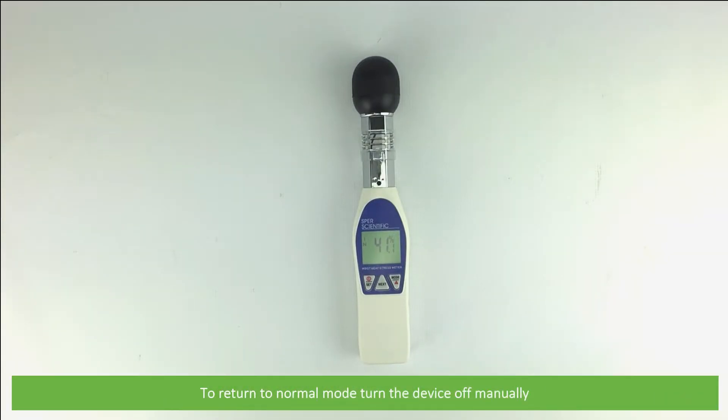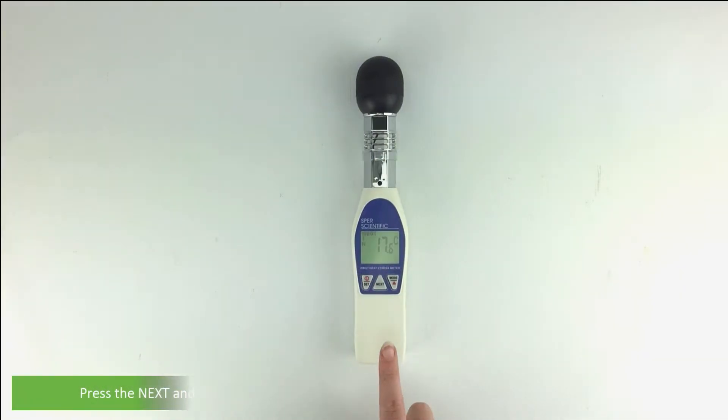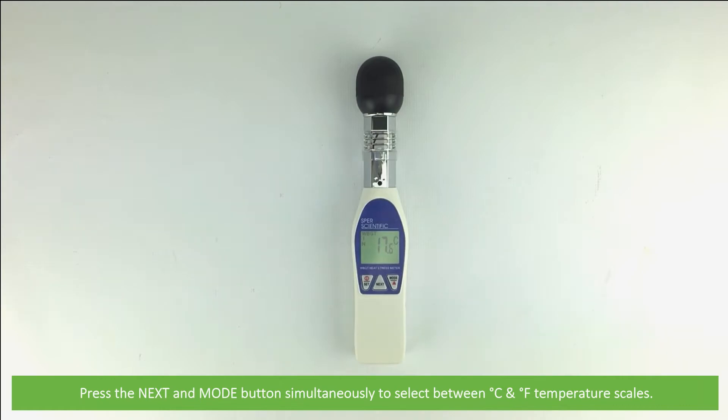To return to normal mode, turn the device off manually. Press the NEXT and MODE button simultaneously to select between Celsius and Fahrenheit temperature scales.